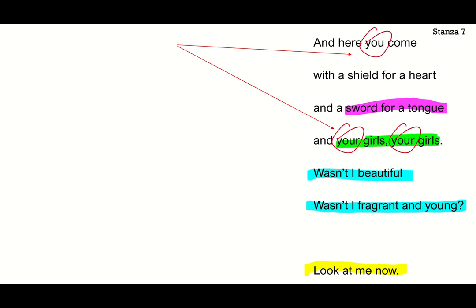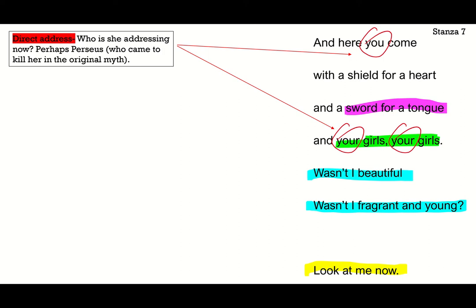Finally, stanza seven, finishing the poem: 'And here you come with a shield for a heart and a sword for a tongue and your girls, your girls. Wasn't I beautiful? Wasn't I fragrant and young? Look at me now.' This is a direct address — 'and here you come,' 'your girls, your girls.' The question is: who is she addressing? Perhaps she's addressing Perseus, the Greek hero who came to fight her and cut off her head in the original myth — he eventually beheaded her. That would make sense with the original story.